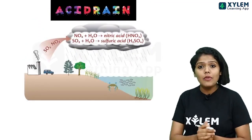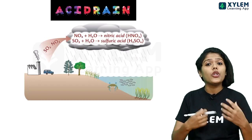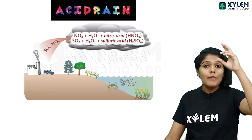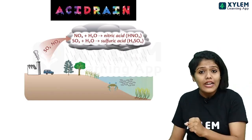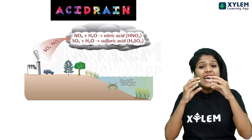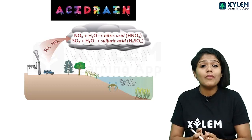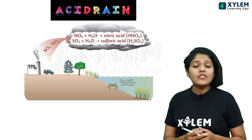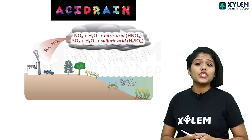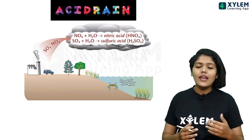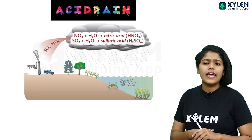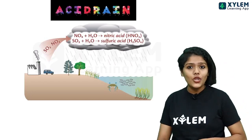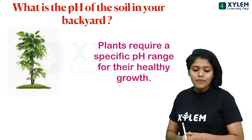Acid rain is another concern. When sulfur dioxide and oxides of nitrogen combine with water, they form acid rain. Acid rain causes destruction to the ecosystem — affecting soil, ponds, and water bodies in all areas.